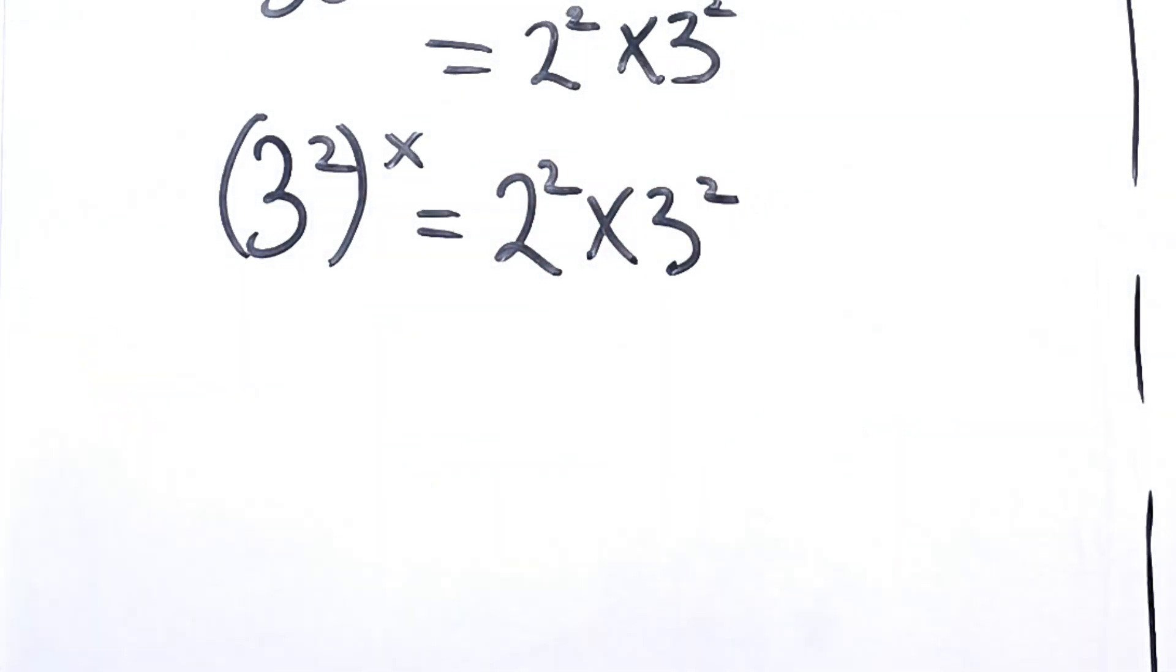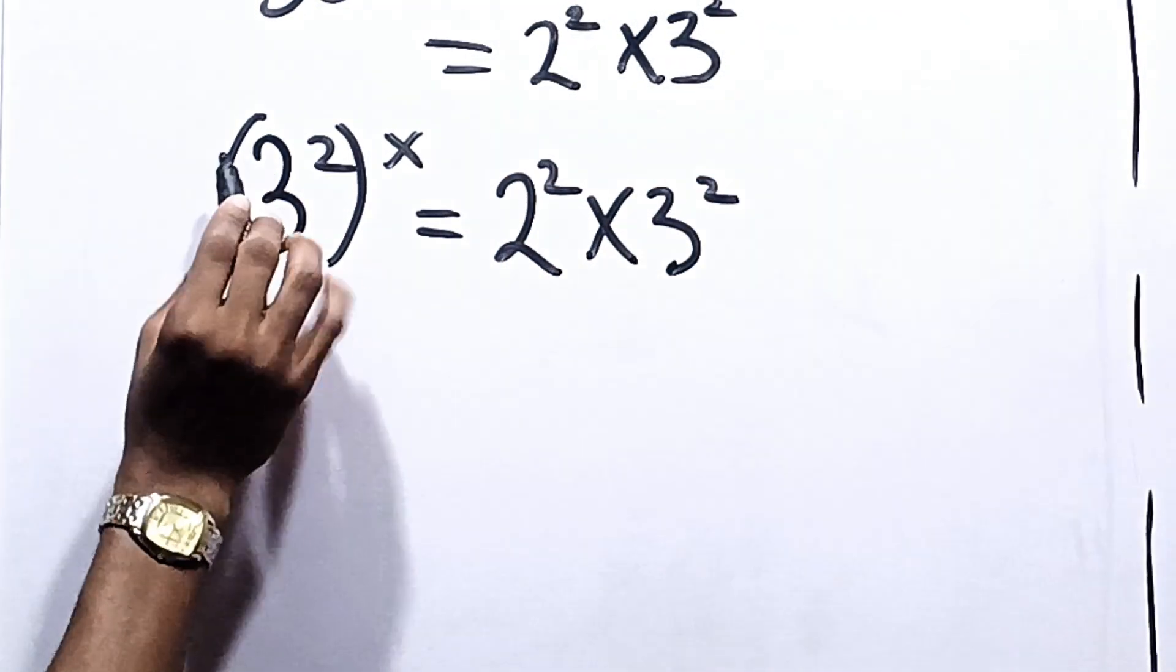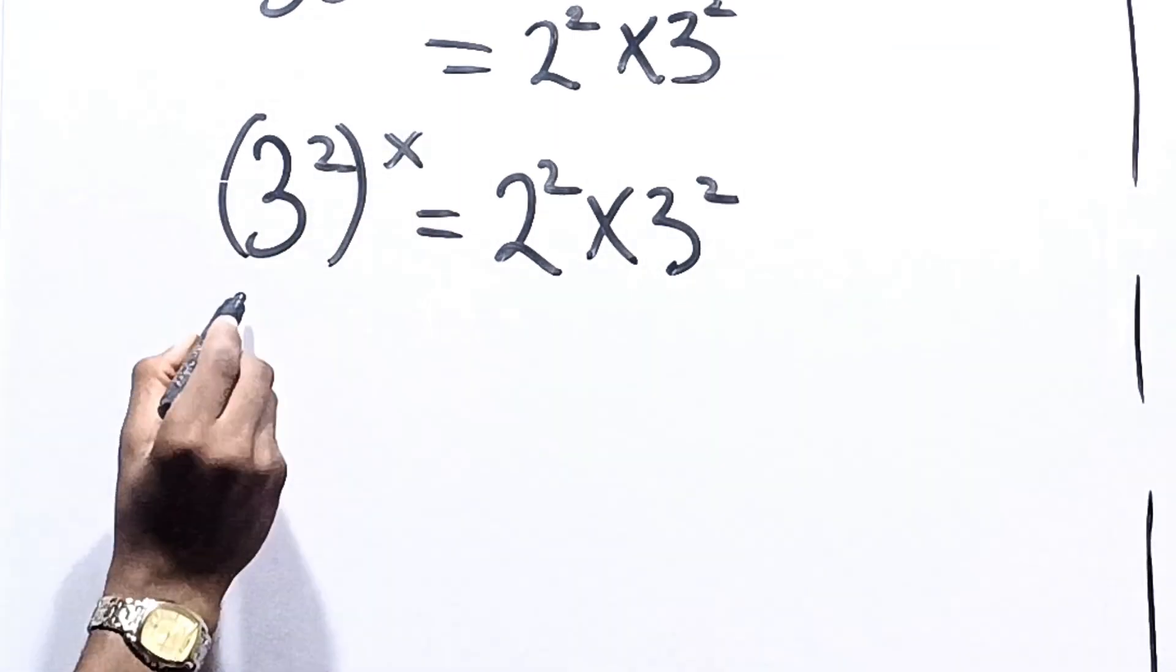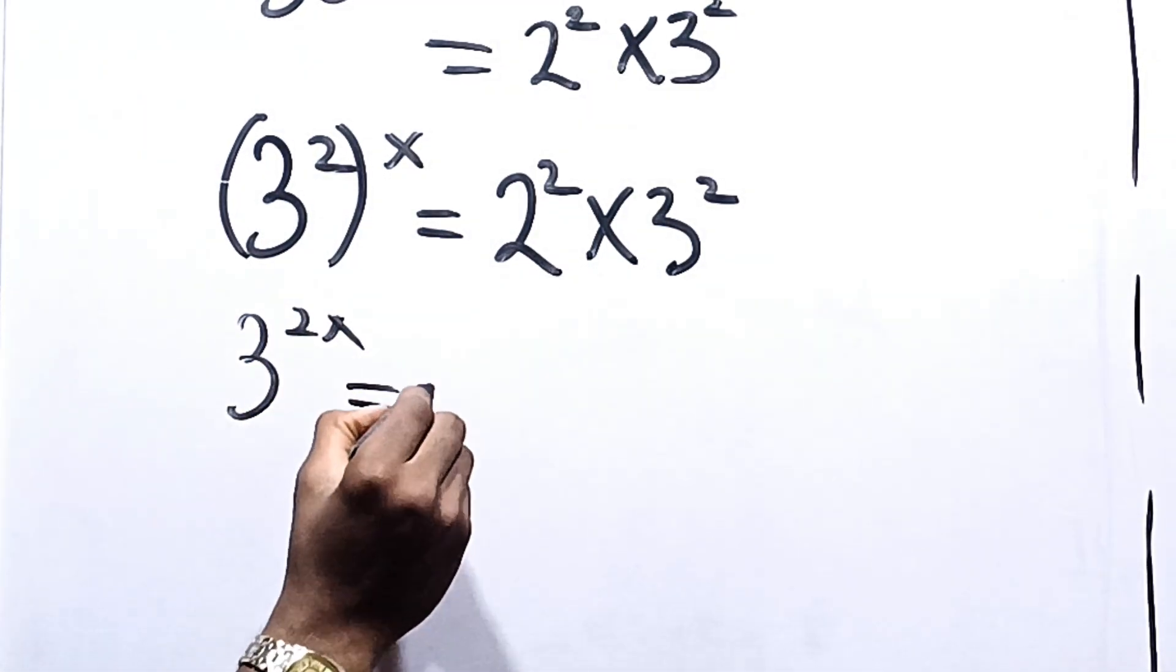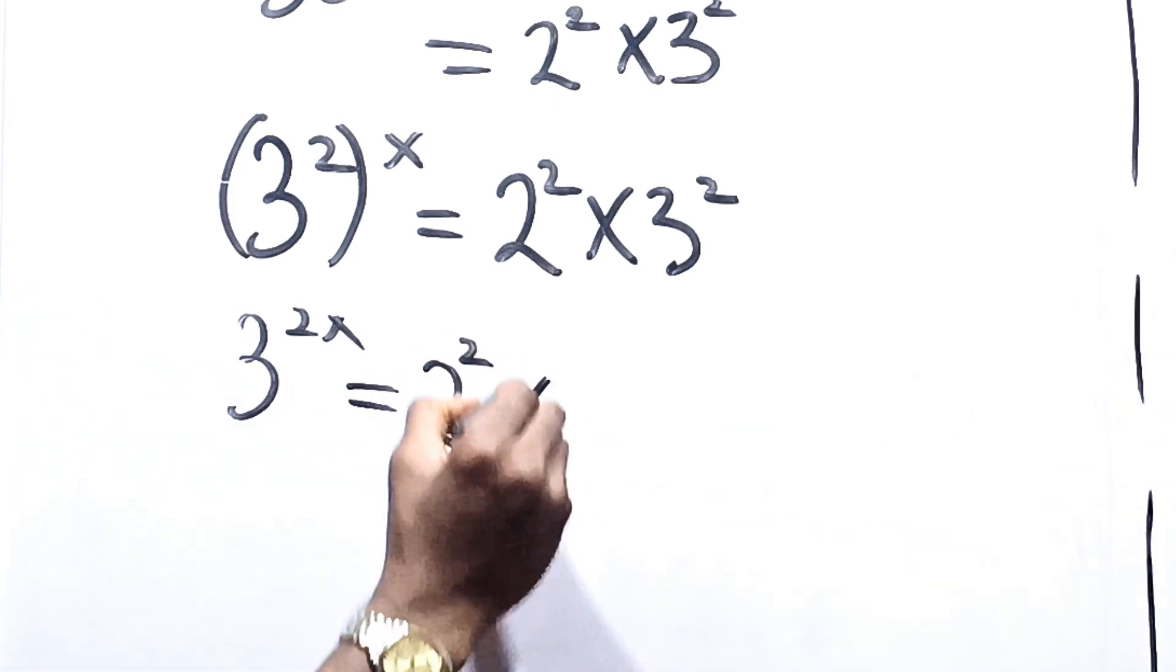Now from here, when you have something like this, you multiply the powers. So we have 3 raised to the power of 2x is equal to 2 squared times 3 squared.